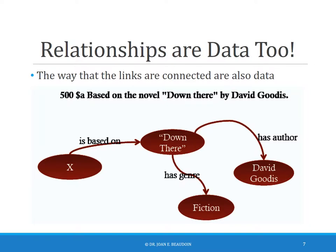The relationships between data points are also data. Here I'm providing a little graph that shows the way that links can be connected. So X may be based on something with a title, and that title has the genre of fiction, and has the author David Goodis. So all of those relationships — is based on, has genre, has author — are data points too, a specific kind of meaningful information. What you're seeing is a MARC 500 field presented as a graph, a small snippet of data about resources and the relationships between them. That is the underlying principle behind the semantic web.